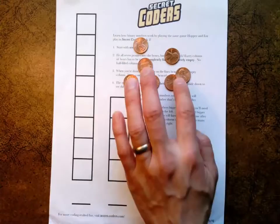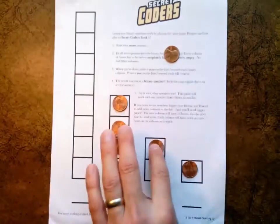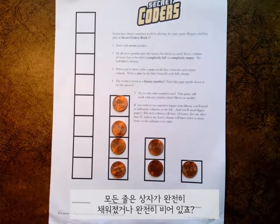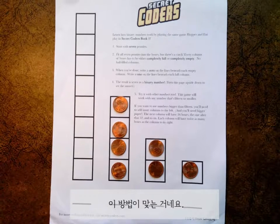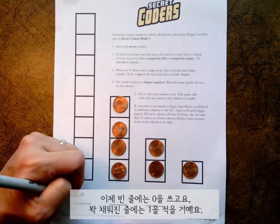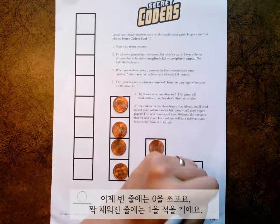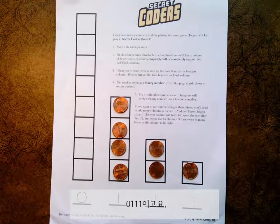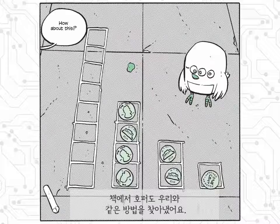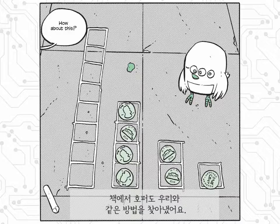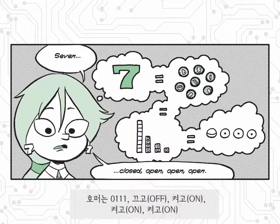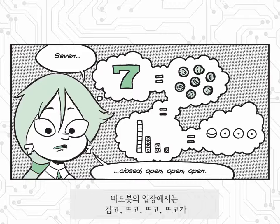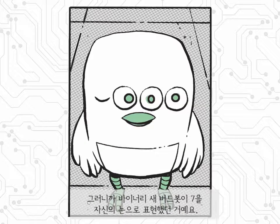Now let's see if we can figure out a solution. Every column is either completely empty or completely full — no half-filled columns — so the solution is right. Under every empty column I'll write a zero, and under every full column I'll write a one. This means that in binary, seven equals 0111, or off, on, on, on. In the book, Hopper gets the same solution — seven is 0111, which is off, on, on, on, or in the case of the birds: closed, open, open, open. They're all the same thing. So the bird really is showing seven with its eyes.